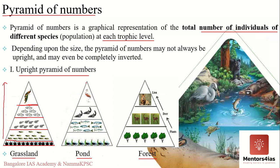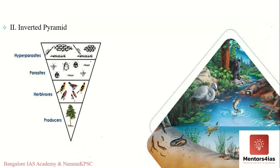An inverted pyramid of numbers is seen in a tree ecosystem. Here the first trophic level contains only one tree. The next level is occupied by birds which feed on fruits and are greater in number. The next level is occupied by parasites or even hyper-parasites which feed off the birds and are even greater in number. So in a pyramid of numbers, you may have an upright or an inverted pyramid — it is not restricted.